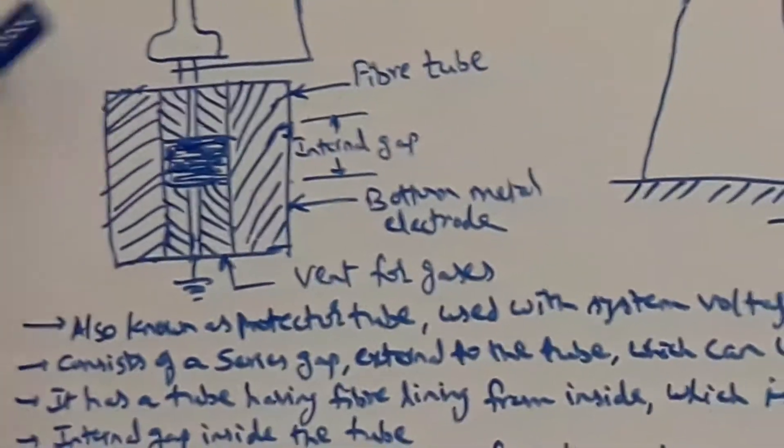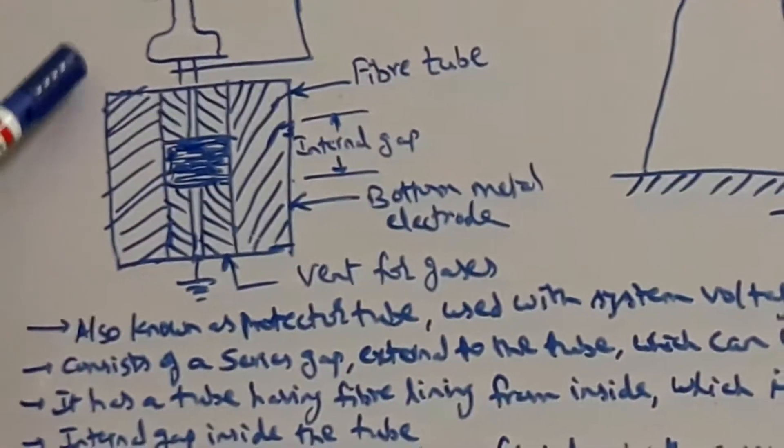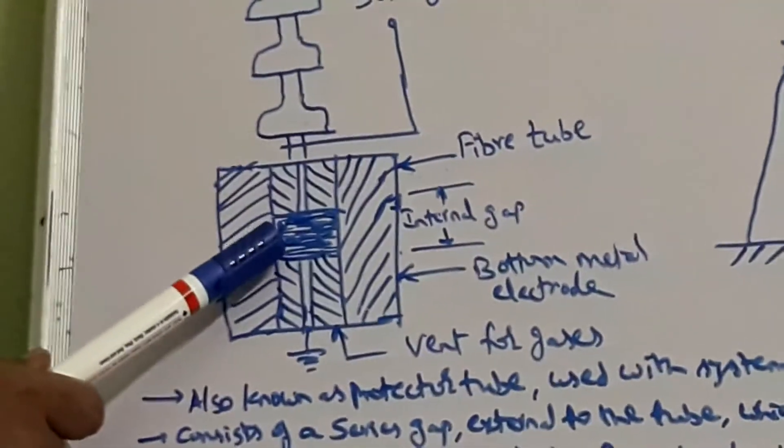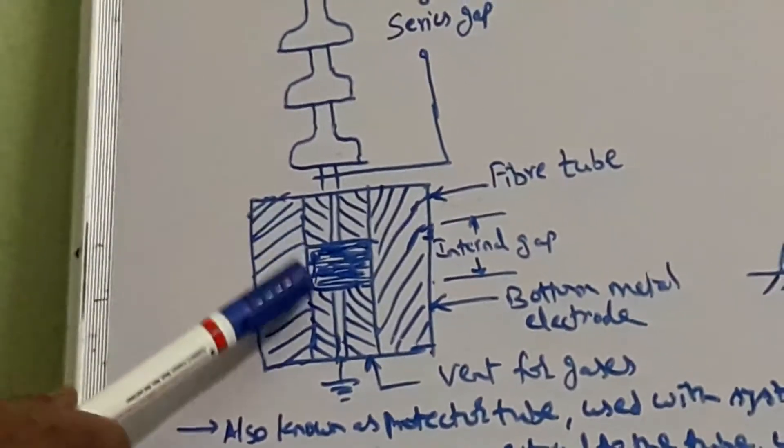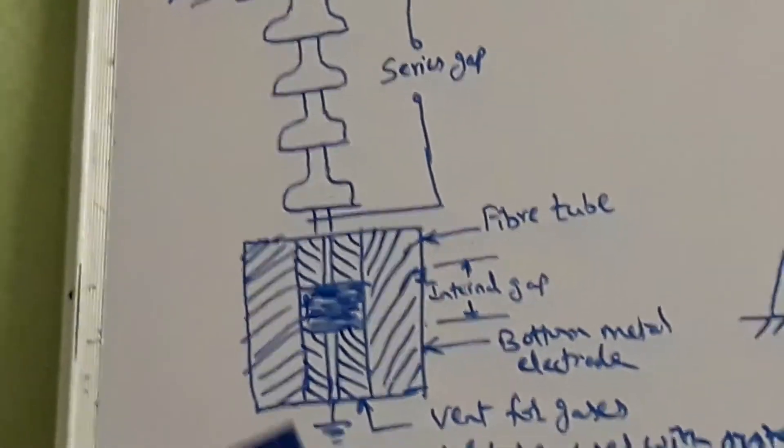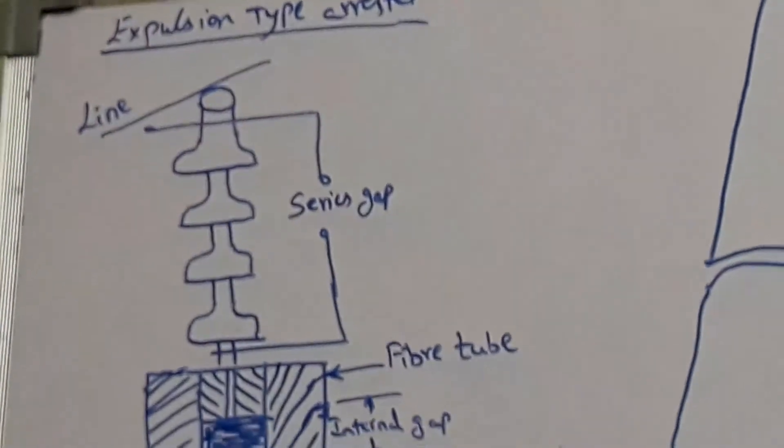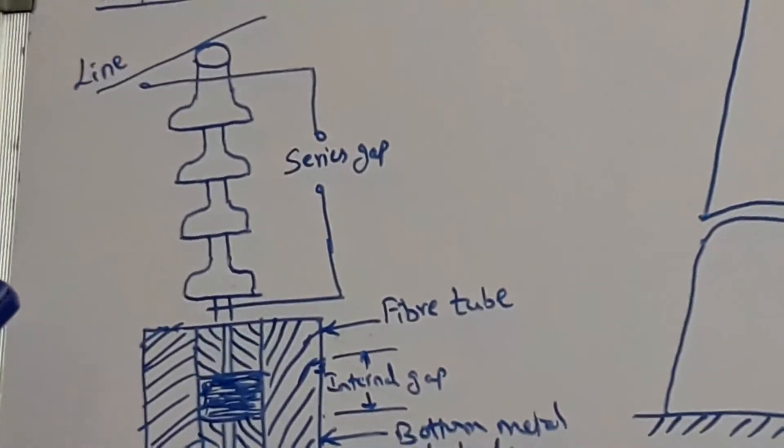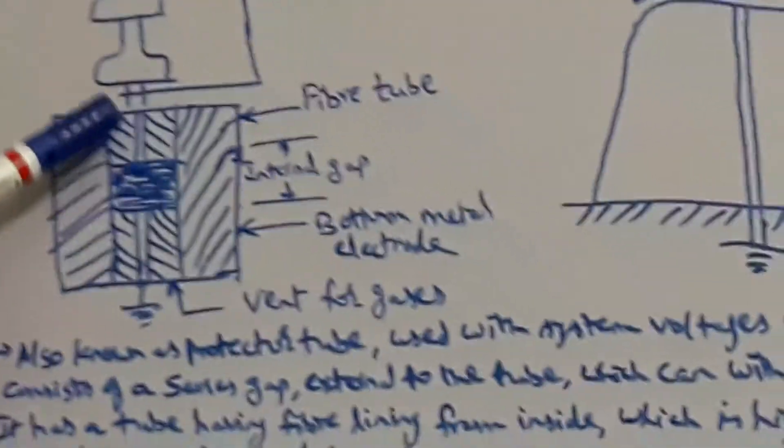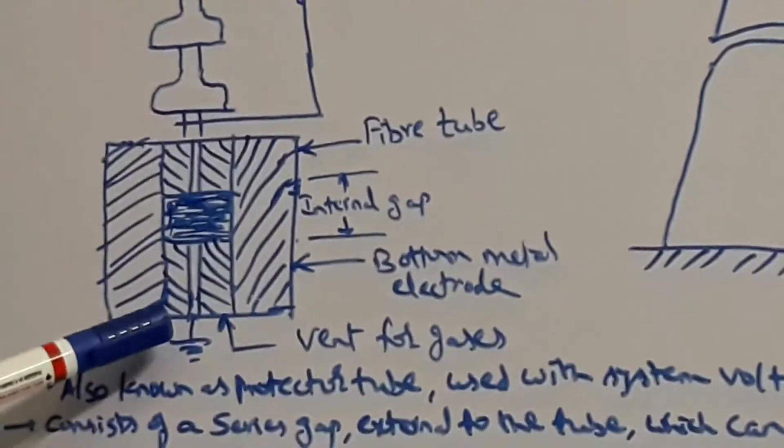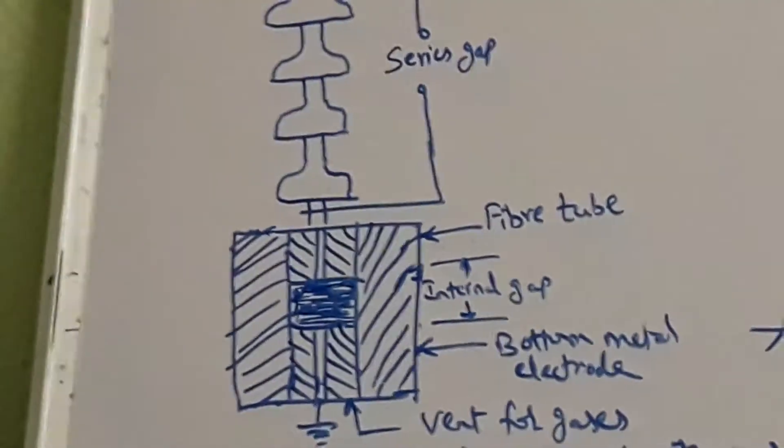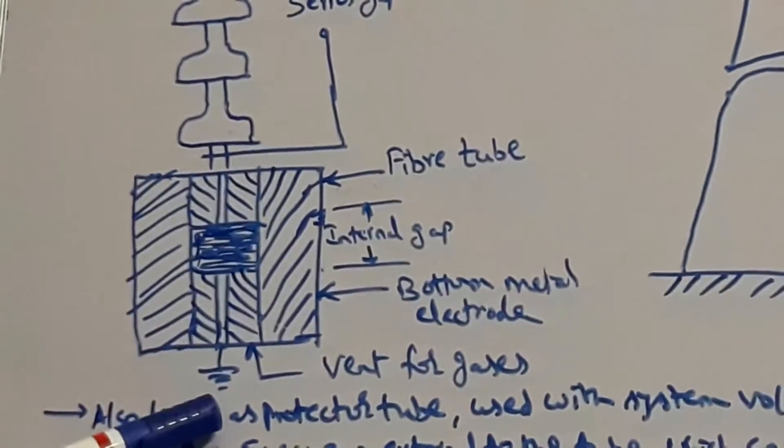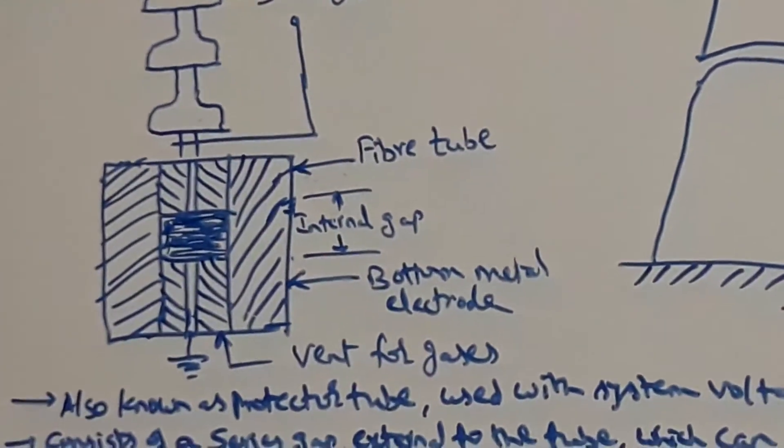The breakdown voltage of the tube should be less than the breakdown voltage of the insulation for which it is used. When an overvoltage occurs, there is a breakdown in the series cap and an arc forms between the two electrodes in the fiber tube, providing a low impedance path for the lightning current to earth. Heat is produced by the arc.